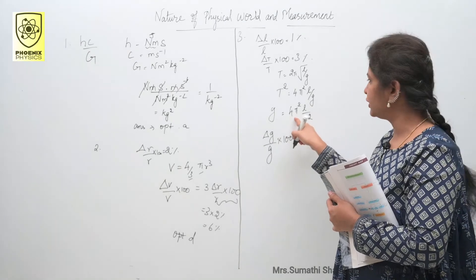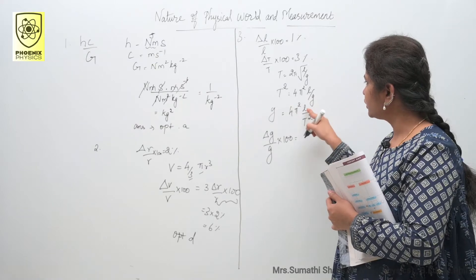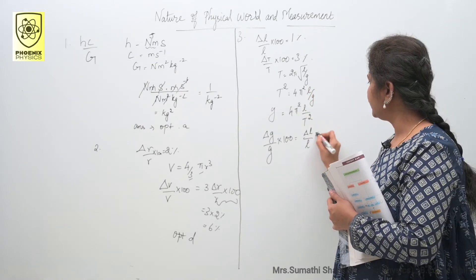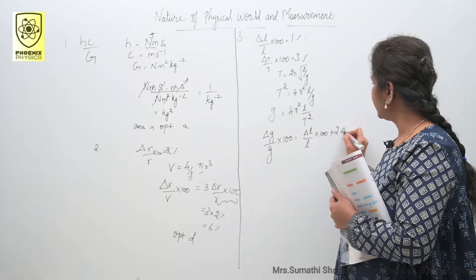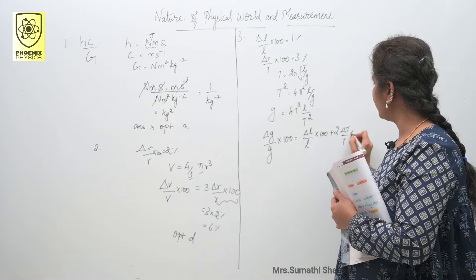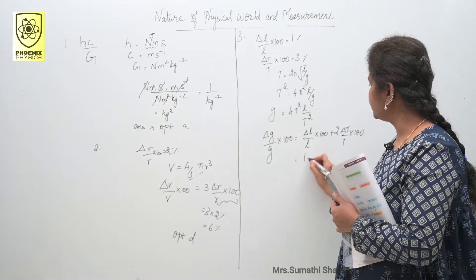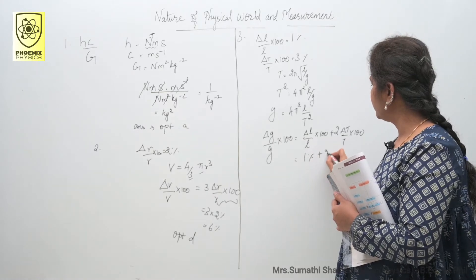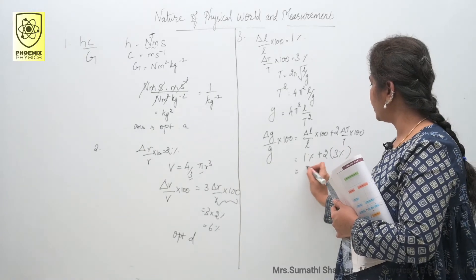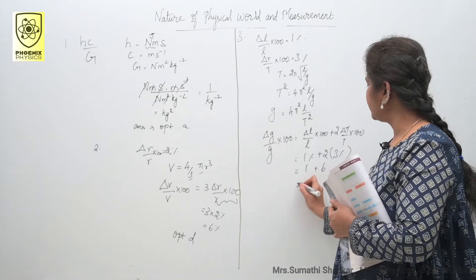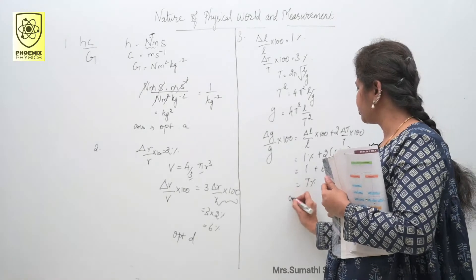Since 4π² is constant, leave it. The error formula gives delta l by l into 100 plus 2 times delta t by t into 100. Substituting: 1% plus 2 times 3% equals 1% plus 6%, giving a total of 7%. The answer is option D.